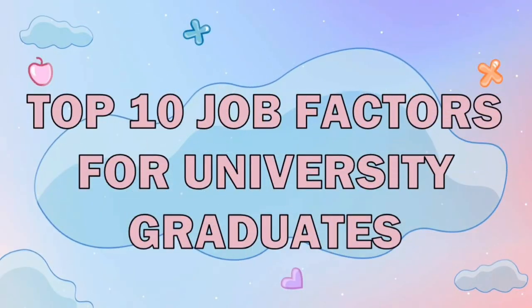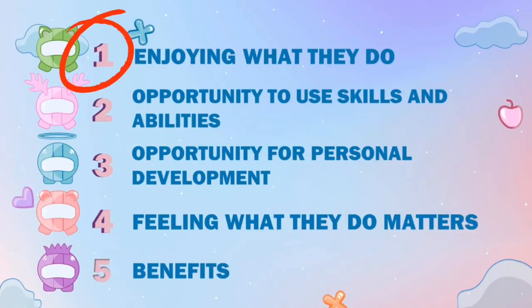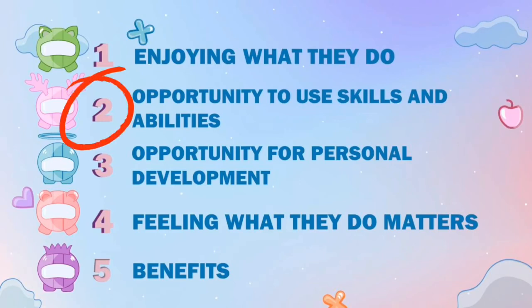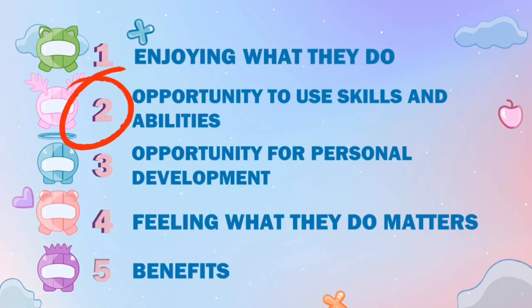We have the top 10 job factors for university graduates. Number one is enjoying what they do — sometimes it is simply passion that drives an employee to apply for a job, especially when they enjoy or love their work. Number two is opportunity to use skills and abilities. University graduates are capable people with skills, so they apply what they have learned to a job that will give them the opportunity to use all of that. University graduates first look for a job where they can use their knowledge and capabilities in a certain field.